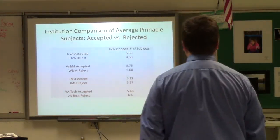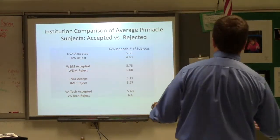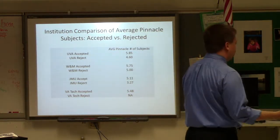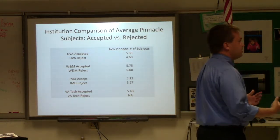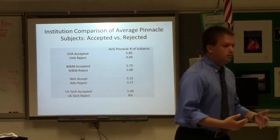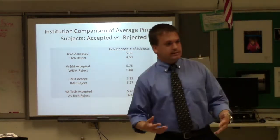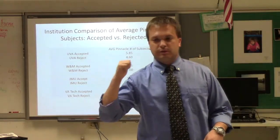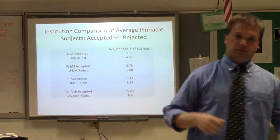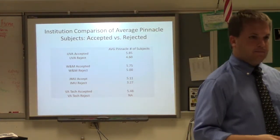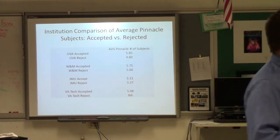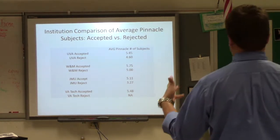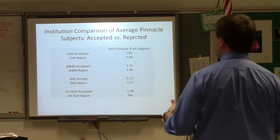Looking at just average pinnacle subjects: someone asked what a kid who got rejected looks like. These were the average number of pinnacle subjects for the rejected versus the admitted. Obviously you can see a trend: the higher the number, the more likely you were to get in.